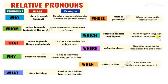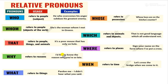'That' refers to people, things, and animals — for example, 'it's a poor mouse that has only one hole.' 'Which' refers to animals and objects — for example, 'food which all understand.' 'Why' refers to reasons — for example, 'I would like to know the reasons why you are so late.'